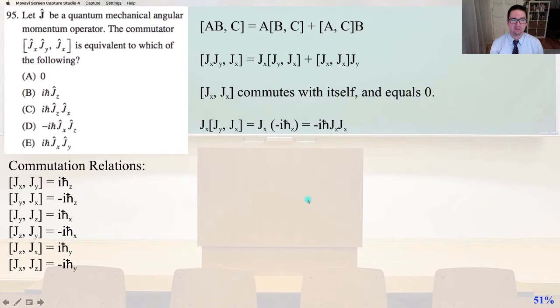Number 95, let J hat be a quantum mechanical angular momentum operator. The commutator, J_x, J_y, J_x is equivalent to which of the following? So we need to know our commutation relations, so I've detailed them out for you over here. And so we also need to know the matrix trick is that [AB, C] equals A times [B, C] plus [A, C] times B. Okay, so let's apply this to our problem, and we would see that [J_x, J_y, J_x] is going to equal J_x times [J_y, J_x] plus [J_x, J_x], that times J_y.